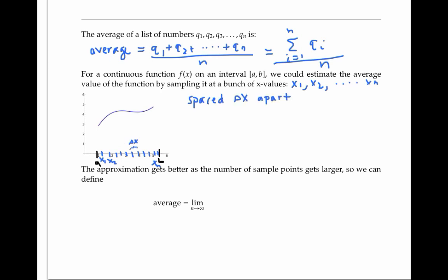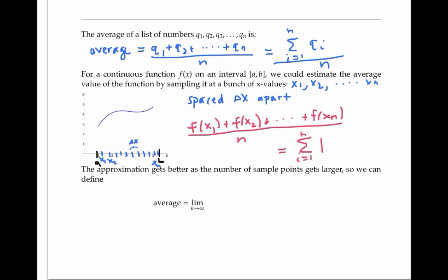Then the average value of f at the sample points is just the sum of the values of f divided by n, the number of values — or in summation notation, the sum from i equals one to n of f(x_i), all divided by n. This is an approximate average value of f, since we're just using n sample points. But the approximation gets better as the number of sample points n gets bigger and bigger.